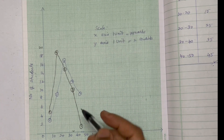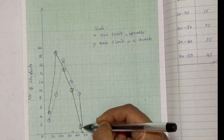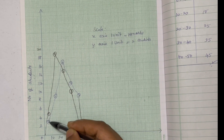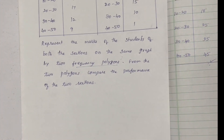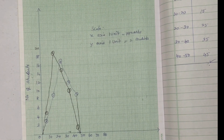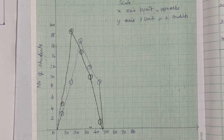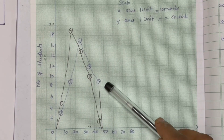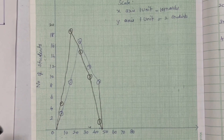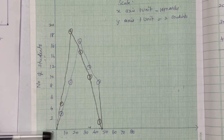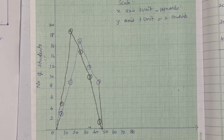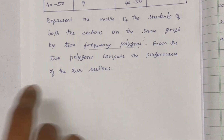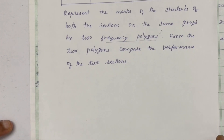Two different curves come together joined in one direction. Comparing the two sections: in Section B the least mark is 5 marks with only 3 students, while Section A performs better overall. Class A's performance is better when comparing the two polygons.